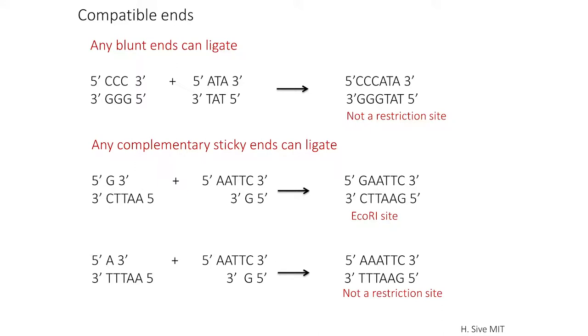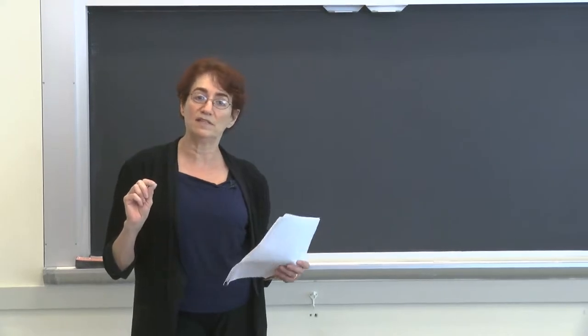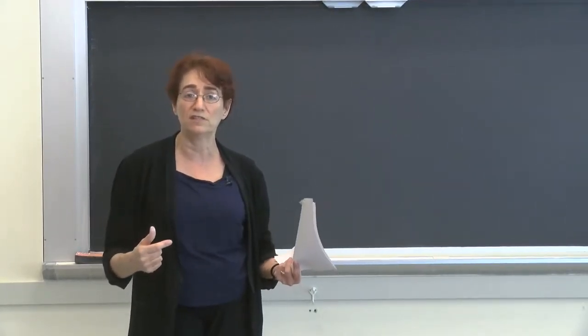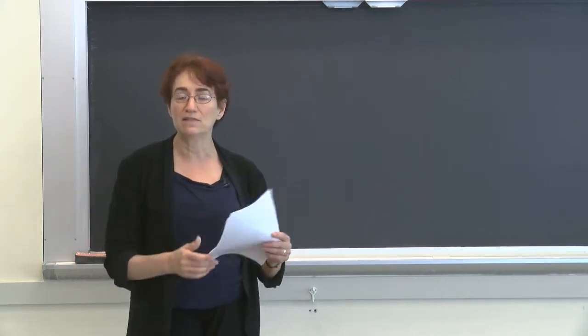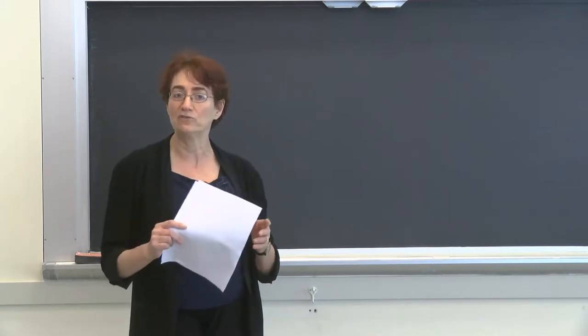You will need to be able to work with compatible ends in order to figure out whether your gene of interest can ligate into your vector. To get the gene of interest into the vector, you have to get your vector ready to receive it. Usually you cut your vector with the same restriction enzyme or enzymes that you've cut your gene of interest with, so the ends can go together in a matching way. You'll get a covalently closed recombinant DNA molecule that has both your vector and your gene of interest.